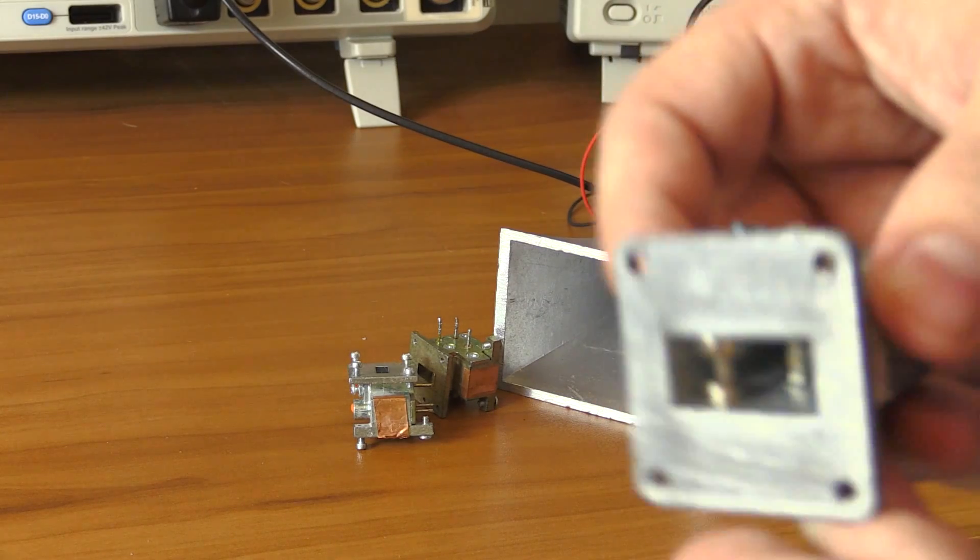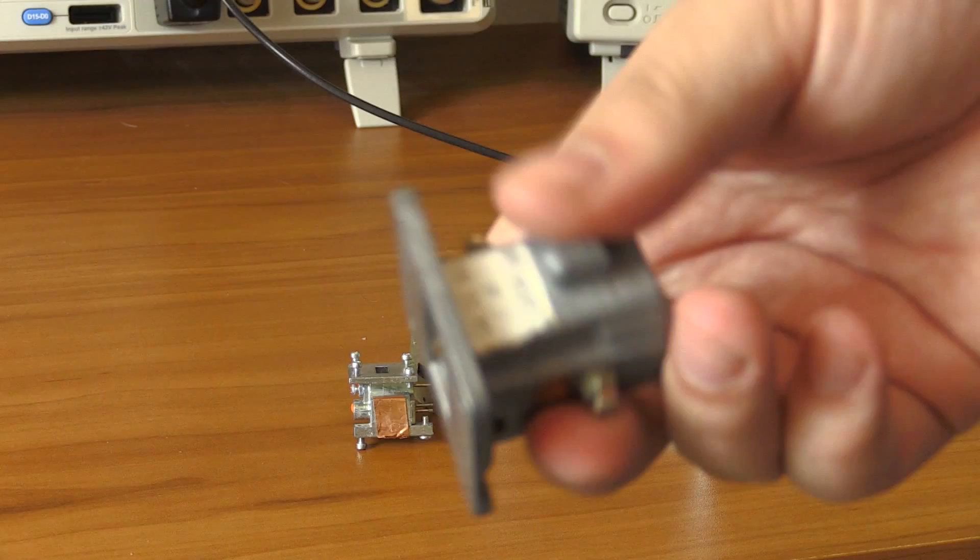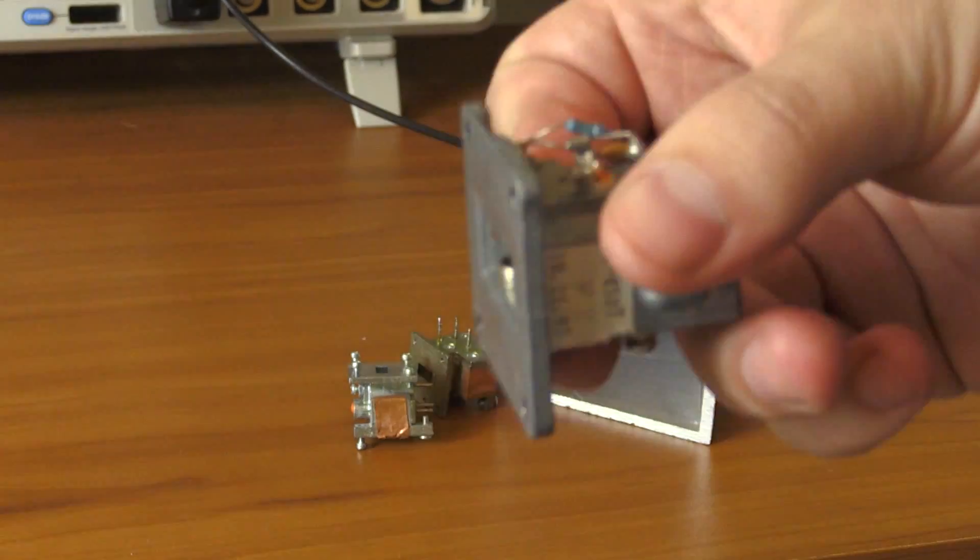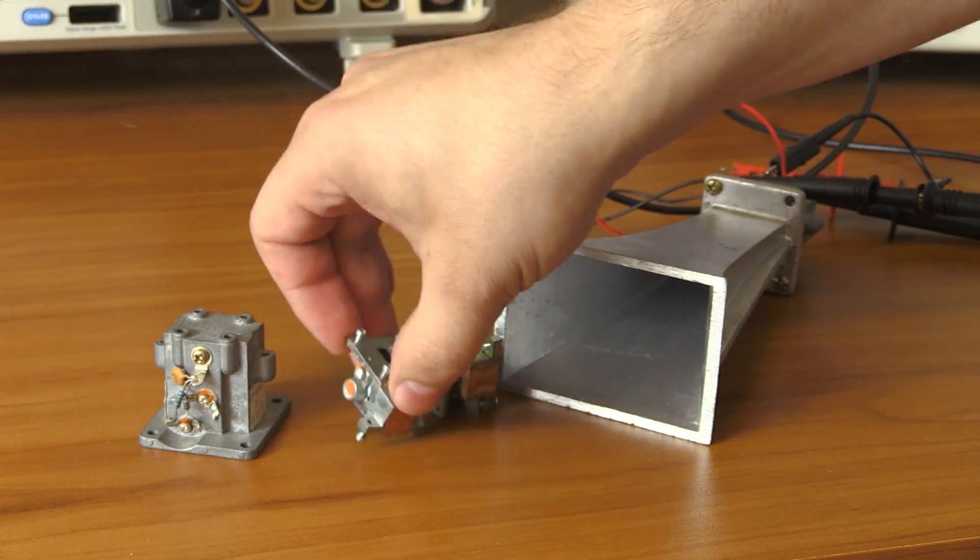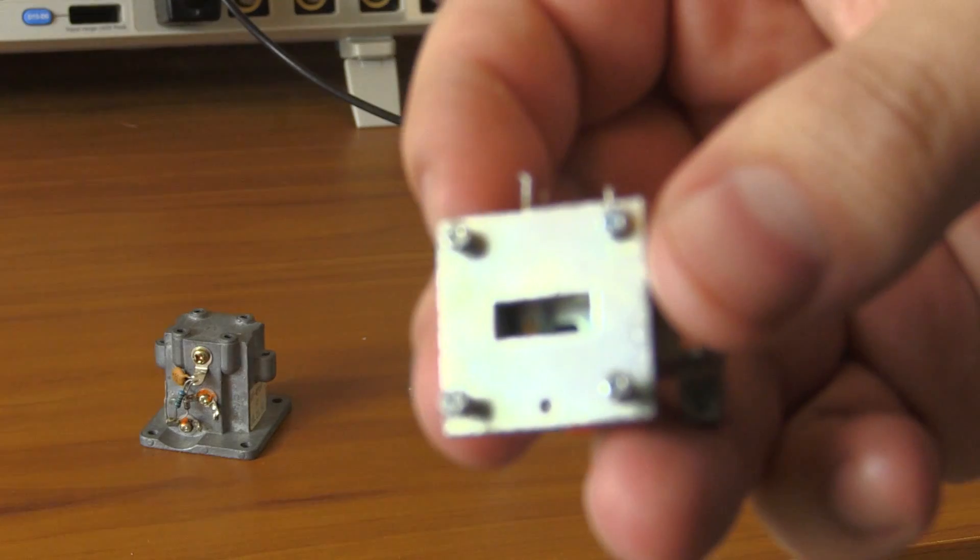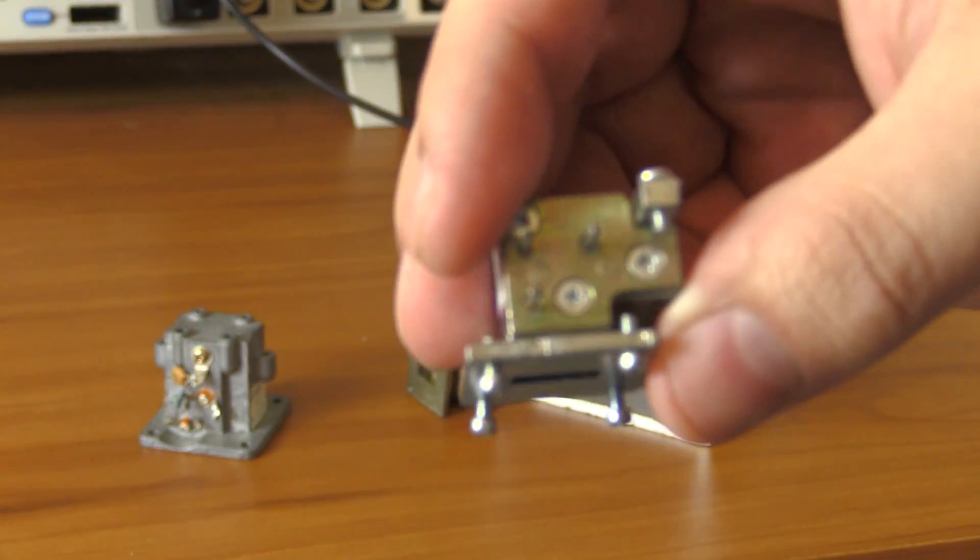This is used in radar speed guns. When the police is after you and you're speeding, this is what's inside one of those radar guns. Here's another one for 24 gigahertz. It's the exact same thing. I know it's not going to focus right, but believe me, it's the same thing.